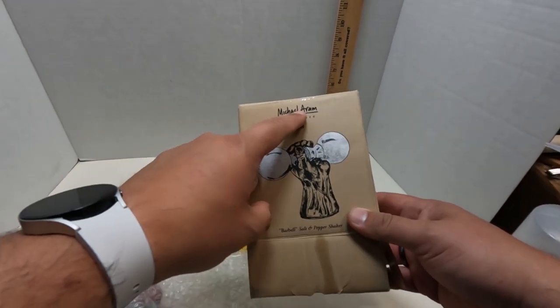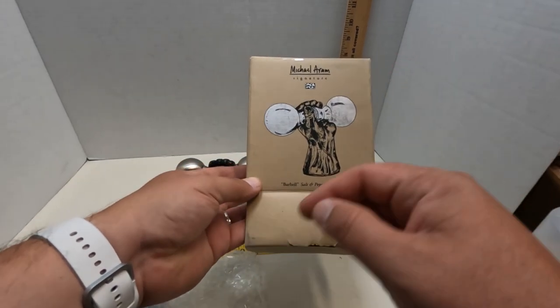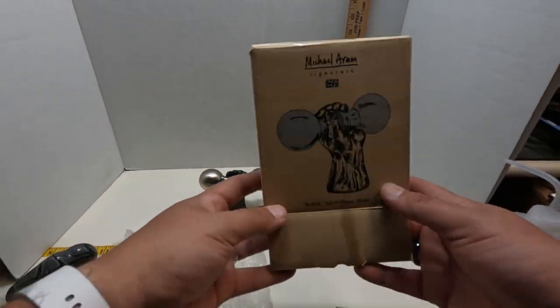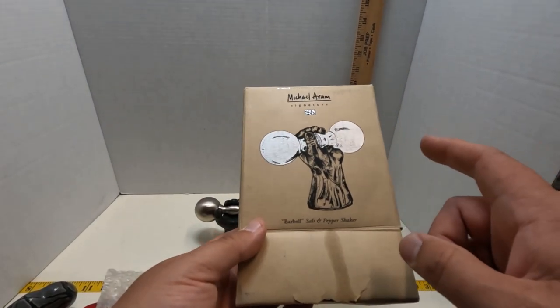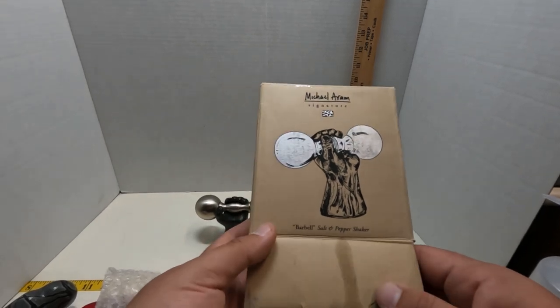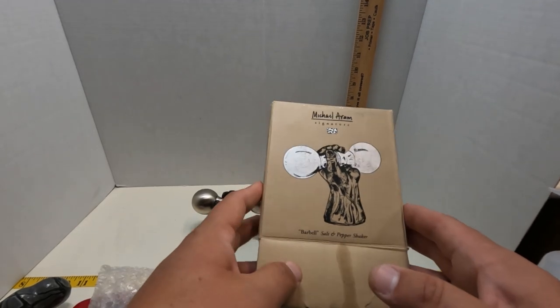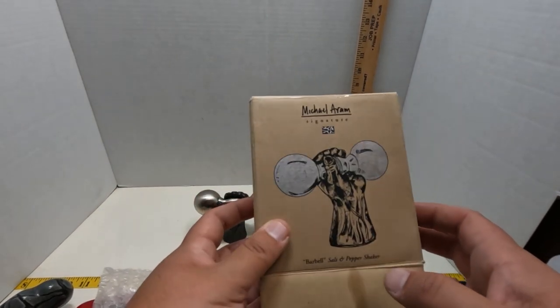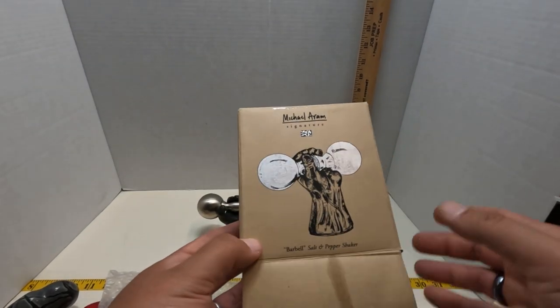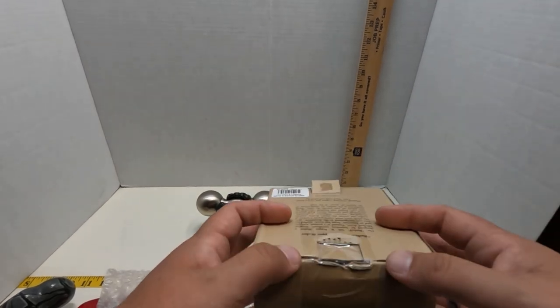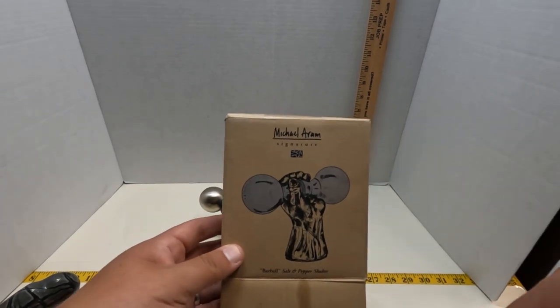I already tried to scan this with the UPC code on eBay and nothing came up, but if you type in Michael Aram and you do barbell salt pepper shaker, this item will come up. This item was purchased for ten dollars. It's gone for as high as a hundred and nine dollars but it's also gone for about 49, so I think I'm probably gonna list it at 60. There's one listed for 50 right now, but I'm gonna promote my item and hopefully that'll give it the little bump it needs to sell before everybody else. I'm gonna take some pictures right now, we'll be back with the next item.